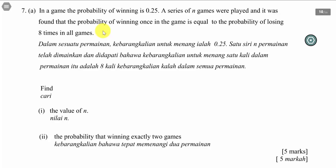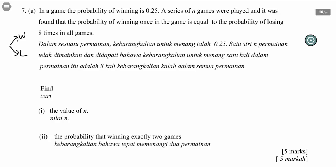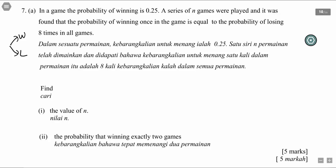First, we have to assume this game does not have a draw — that means this game is either win or lose. There's no draw in between, because if the game had a draw, this method wouldn't work. So the probability of winning p equals 0.25, and q is 1 minus p, so q equals 0.75. p is the probability of winning and q is the probability of losing.